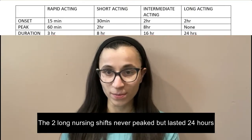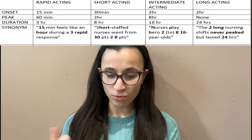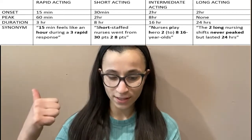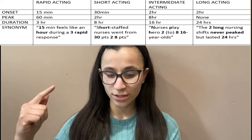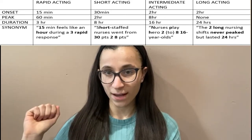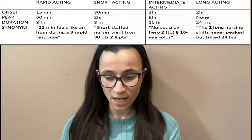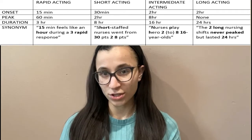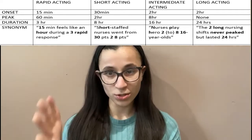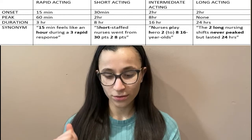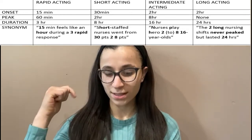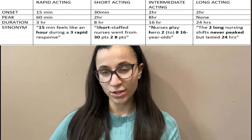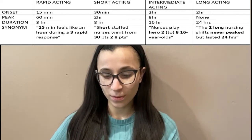Quick review: Rapid acting — '15 minutes feels like an hour during a three rapid response' — onset 15 minutes, peak one hour, duration three hours. Short acting — 'Short staff nurses went from 30 to eight patients' — onset 30 minutes, peak two hours, duration eight hours.